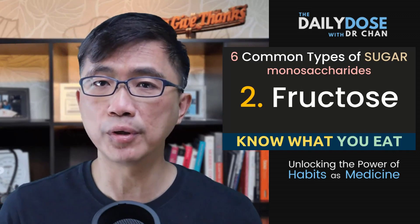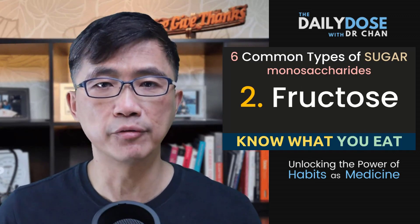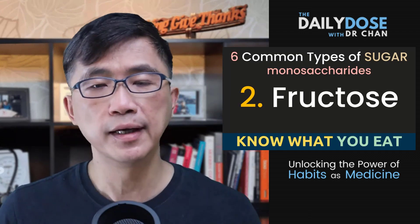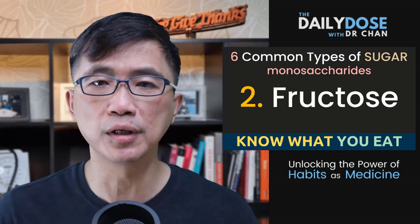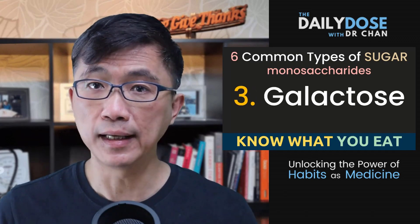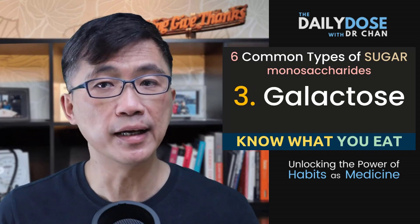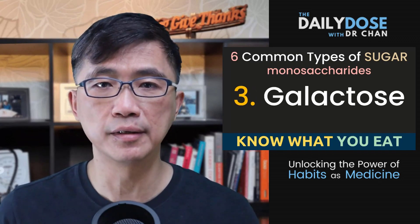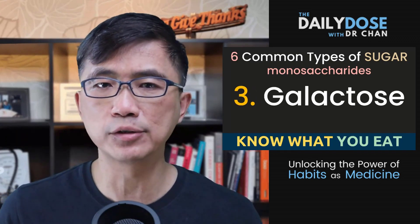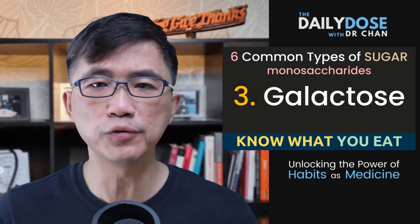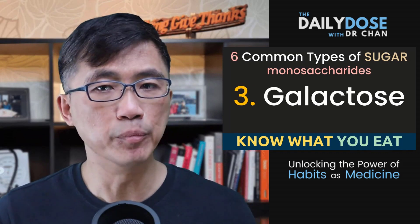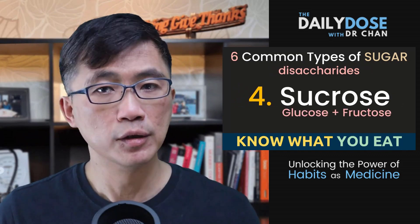Fructose is also a monosaccharide, also known as fruit sugar, and is the main sugar found in fruits, honey, and some vegetables. Galactose is another monosaccharide. Our main dietary source of galactose is actually from the breaking down of lactose in the milk and dairy products that we eat.